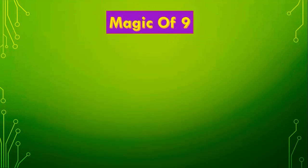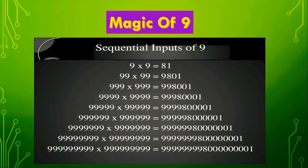Next, the magic of the number 9. 9 is a very peculiar number. We can see the magic of the number through the sequential multiplication of 9s. See the pattern here. First, multiply 9 by 9: 9 × 9 = 81.